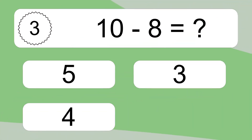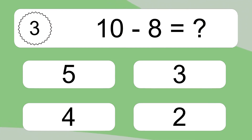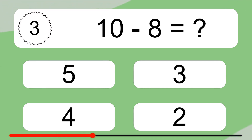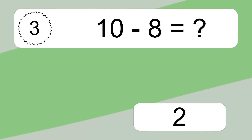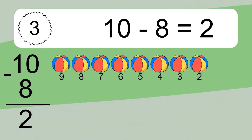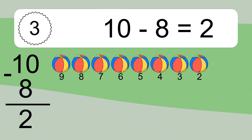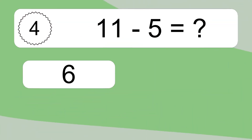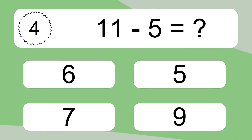10 minus 8 equals what? 10 minus 8 equals 2. Let's count it: 9, 8, 7, 6, 5, 4, 3, 2.